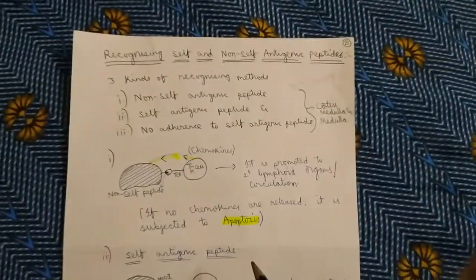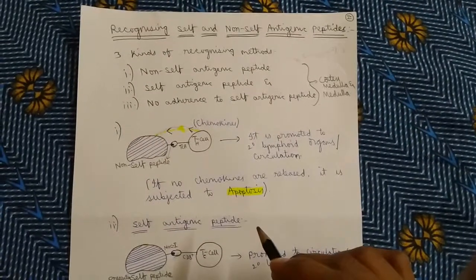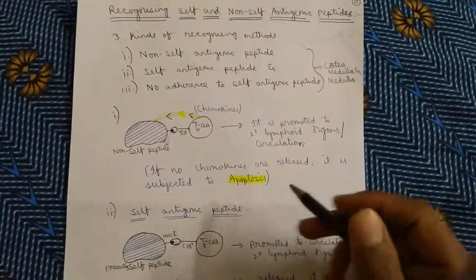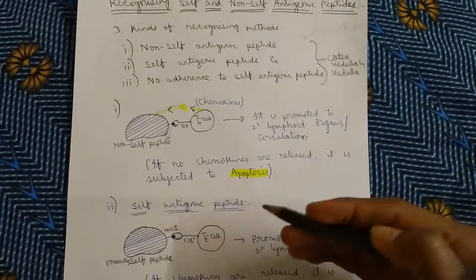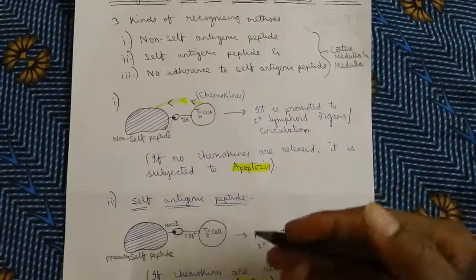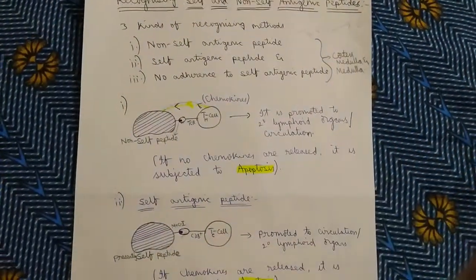That is about the maturation process of T-cells. In the next video, we'll talk about T-cell activation — how they are multiplied, how they are grown, and how they are produced in greater numbers. Thank you.